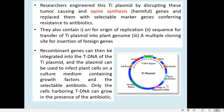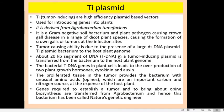This is the Ti plasmid which is a part of Agrobacterium tumefaciens, and it has a particular region called the T-DNA region. When an Agrobacterium infects a host plant cell, this T-DNA part from the Ti plasmid is transferred into the host plant genome. The bacterium is able to transfer a part of its plasmid into the host plant genome, acting like a genetic engineer. That is why Agrobacterium is called nature's genetic engineer.